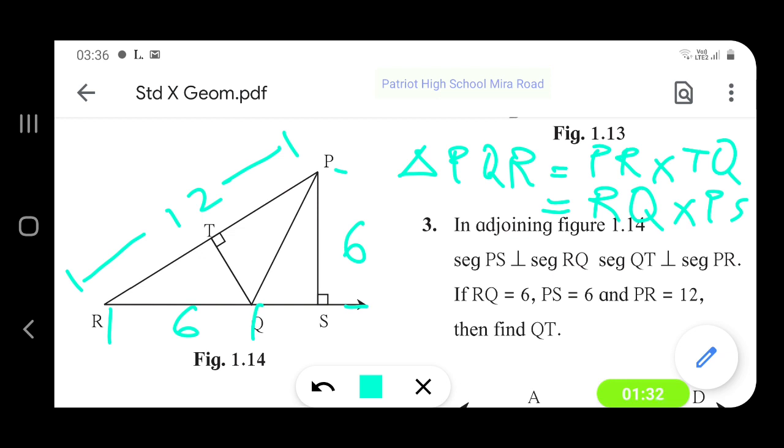Now equate these two - we can write PR into QT equals RQ into PS. Substituting the values of PR, RQ, and PS, you can find out the value of QT. So it is for you to find out.